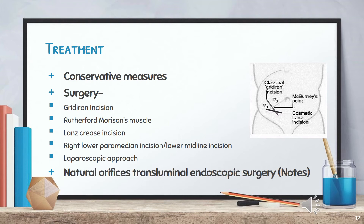Treatment of acute appendicitis: Conservative treatment is considered when the Alvarado score is low, there is no complication on investigation (simple appendicitis), or when the patient is unfit for surgery with mild symptoms. The patient is admitted, resuscitated, given IV antibiotics, analgesia, kept nil per oral, and started on IV fluids. If the patient improves, conservative treatment is continued; if the patient deteriorates or shows no improvement, surgery is performed.